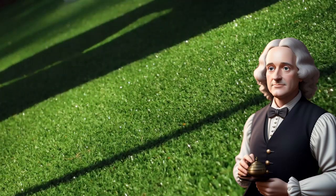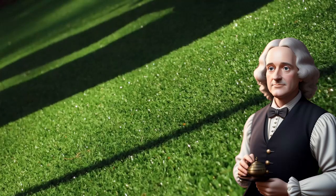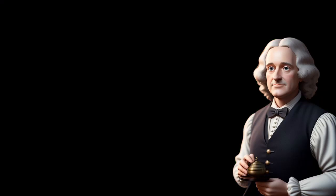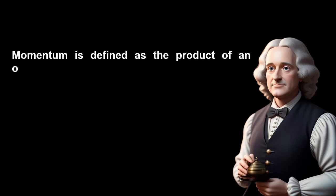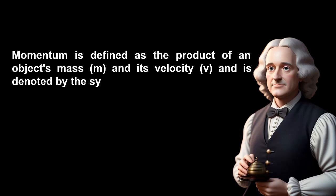To understand the second law better, we need to introduce a new concept: momentum. Momentum is defined as the product of an object's mass, m, and its velocity, v, and is denoted by the symbol p. Mathematically, it can be expressed as p equals mv.